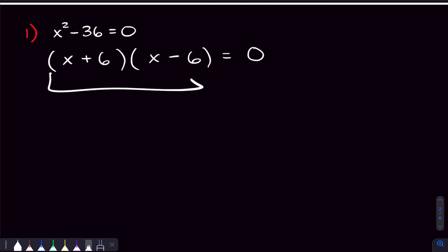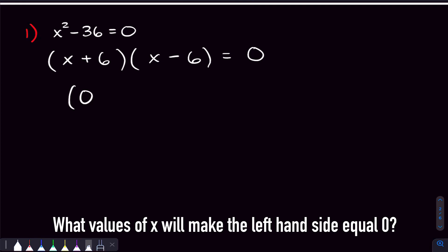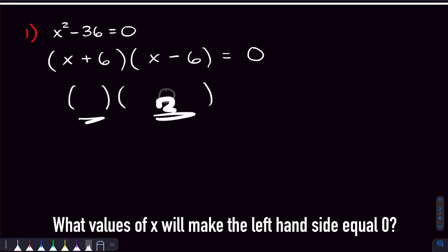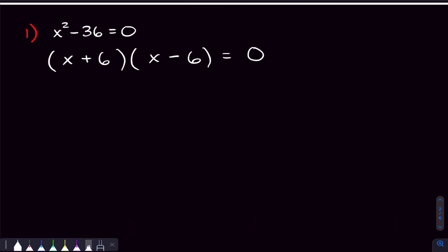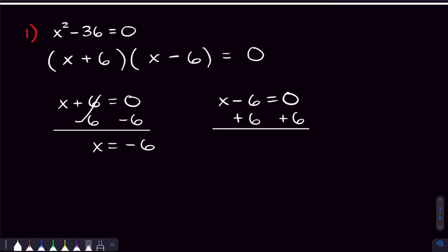We get x plus six times x minus six equals zero. Now that we've fully factored this, we can solve for x. Either factor could be zero — if x plus six equals zero, subtract six on both sides and we get x equals negative six. If x minus six equals zero, add six on both sides and we get x equals six. Those are our two solutions.